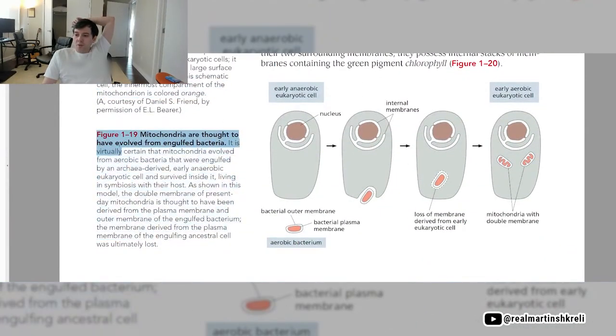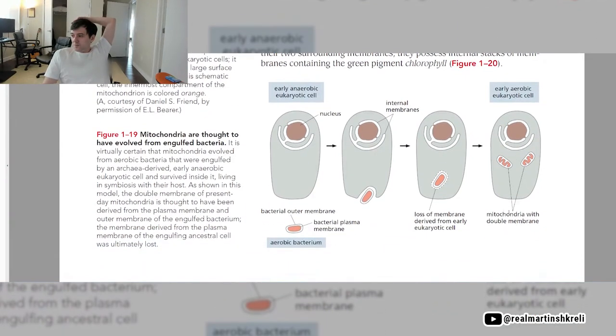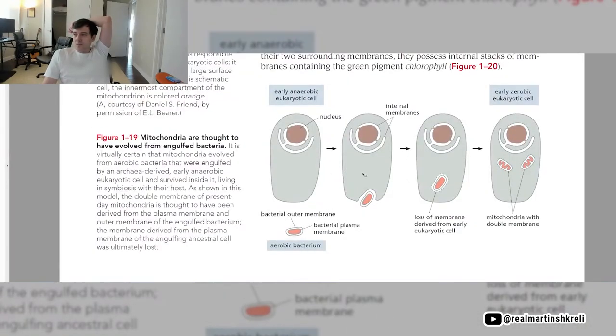Mitochondria thought to have evolved from engulfed bacteria. It is virtually certain that mitochondria evolved from aerobic bacteria that were engulfed by an archaea-derived early anaerobic eukaryotic cell and survived inside of it, living in symbiosis with their host. As shown in this model, the double membrane of the present-day mitochondria is thought to have been derived from the plasma membrane and the outer membrane of the engulfed bacteria. The membrane derived from the plasma membrane of the engulfing ancestral cell was ultimately lost. There's the bacterium. It kind of invaded the host cell and it just kind of lives now with us as one of the most important parts of the cell. These are early aerobic eukaryotic cells and how they adopted, basically, mitochondria, which were originally bacterial.